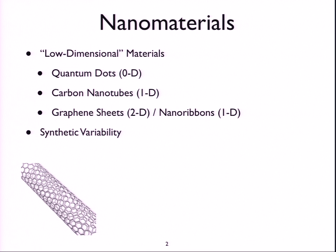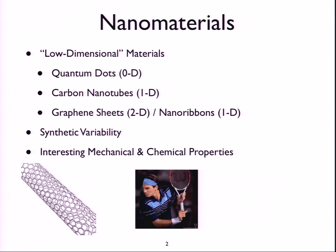These have been receiving a lot of attention in the last decade and a half or so because they have huge synthetic variability in terms of how we can make them, how we can use them, and in particular, they have interesting mechanical and chemical properties. For instance, carbon nanotubes have been used for quite some time in making tennis rackets. They've found that they actually increased the durability and stability of the rackets.